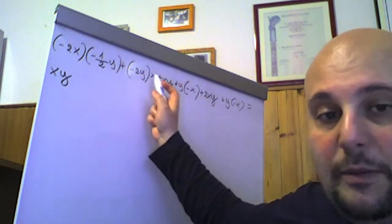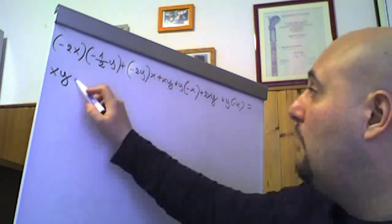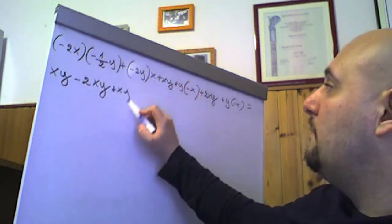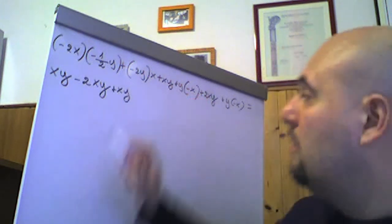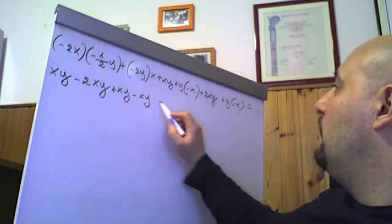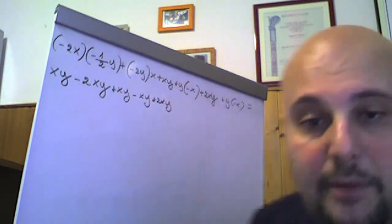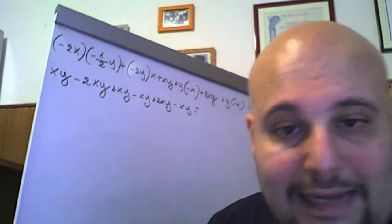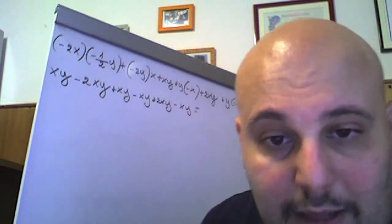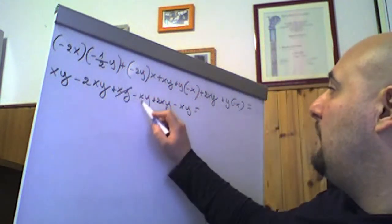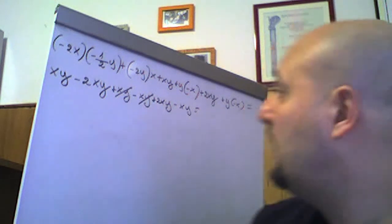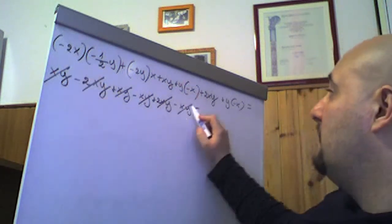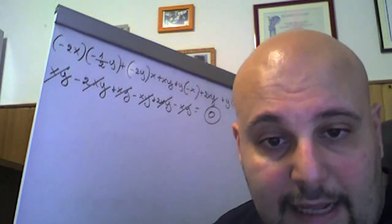Abbiamo: +xy, −2xy, +xy, y × (−x) = −xy, +2xy, y × (−x) = −xy. Tutti monomi simili con parte letterale xy, monomi tutti di secondo grado. Allora: xy − xy = 0, −2xy + 2xy = 0, e anche xy − xy = 0. Questo risultato è pertanto 0.